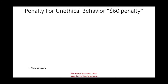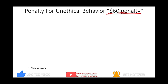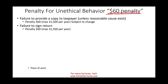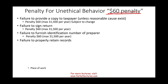There is a series of $60 procedural penalties (subject to change): failure to provide a copy to the taxpayer (unless reasonable cause exists), $60; failure to sign a return, $60, maximum $31,500; failure to furnish your identification number, $60, maximum $31,500; and failure to properly retain records for three years — either the return copy or a client listing — $60 or $31,500 per year.